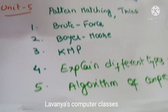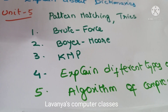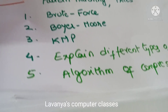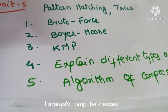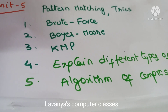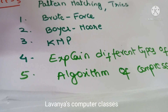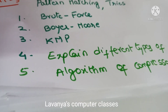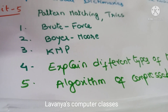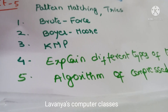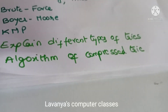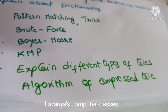These are the important questions in unit 5. Unit 5 is divided into two categories: one is tries, and second one is pattern matching algorithms. In pattern matching algorithms, there are three types: brute force, Boyer-Moore, and KMP. Read any two algorithms — mostly concentrate on KMP and Boyer-Moore. And two different types of tries: standard tries, compressive tries, and suffix tries. Explain all these with algorithms — different types of tries and algorithms of these tries.